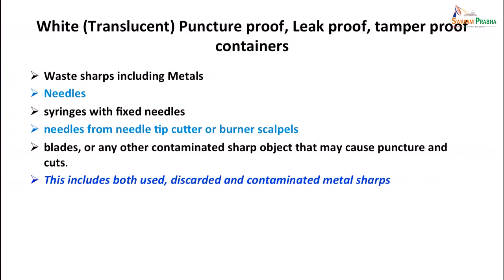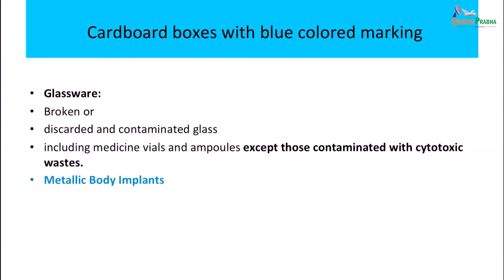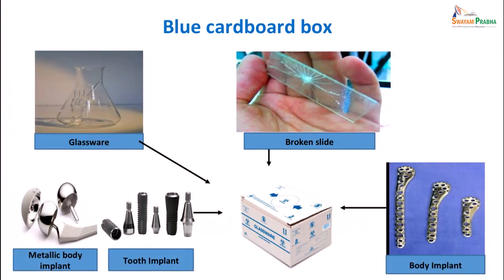The white or translucent puncture-proof, leak-proof and tamper-proof container contains waste sharps including metals: needles, syringes, needles from needle tip cutters, and blades. Cardboard boxes with blue colored markings are used to collect broken or discarded or contaminated glassware including medicine vials and ampules contaminated with cytotoxic waste, as well as metallic body parts.